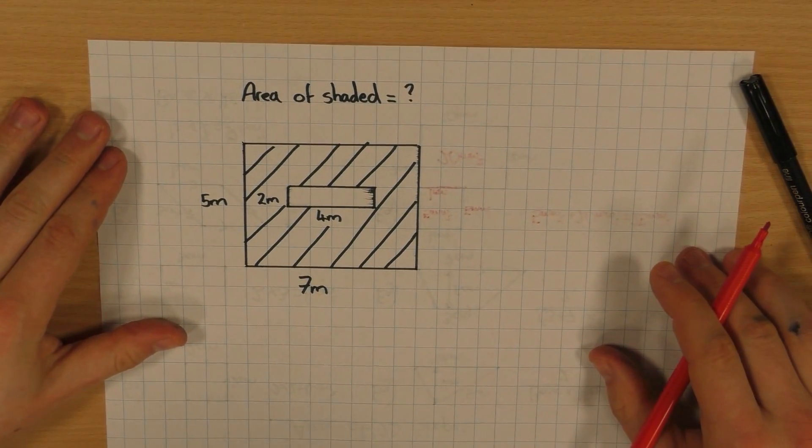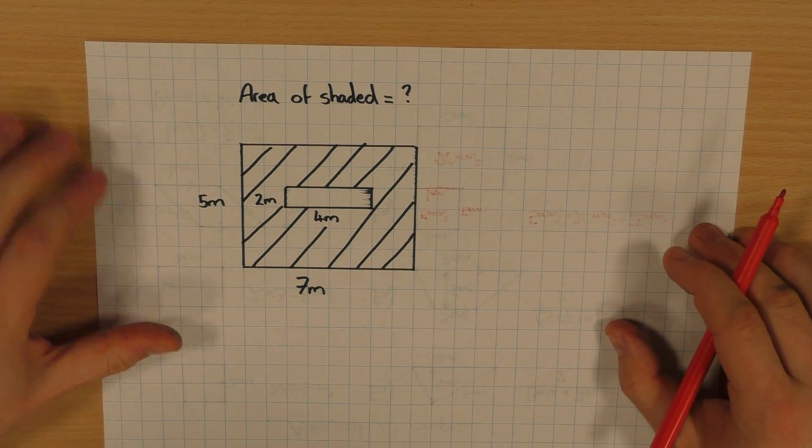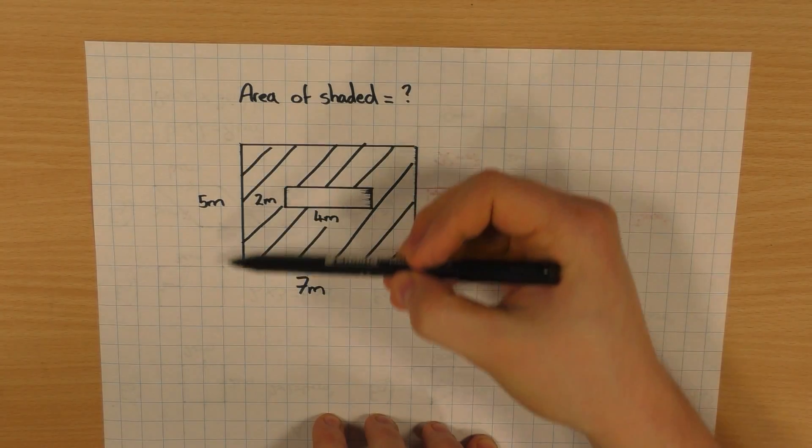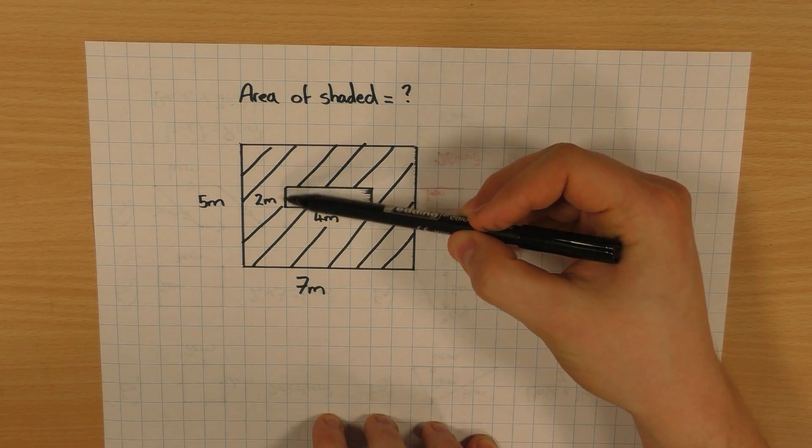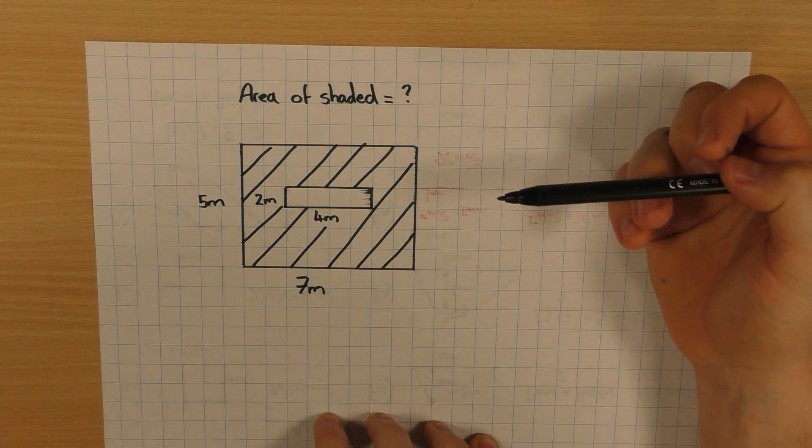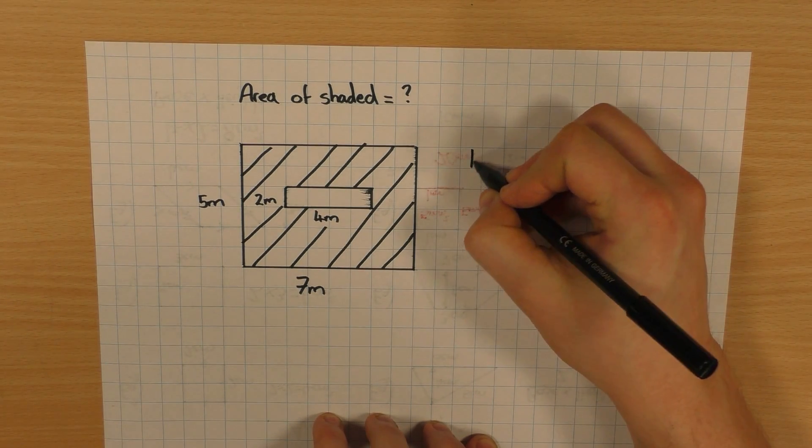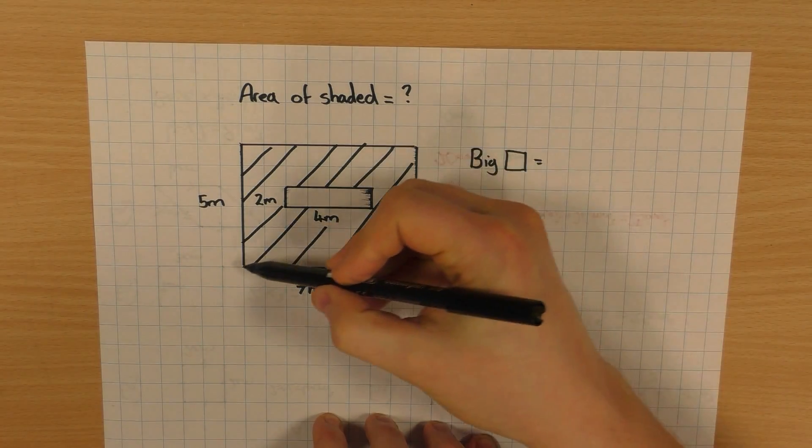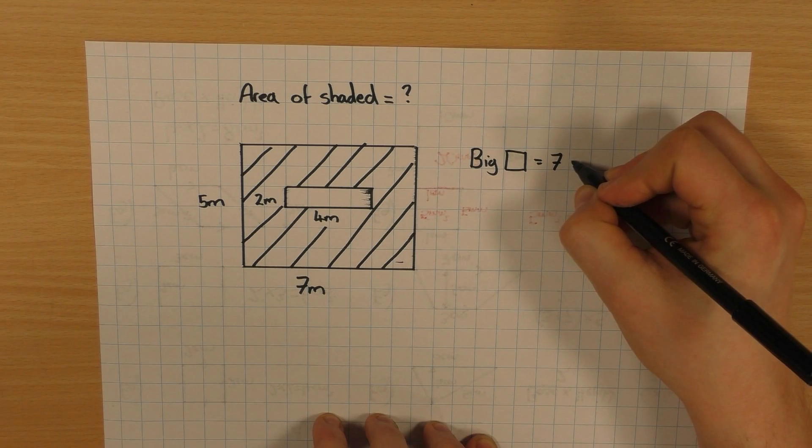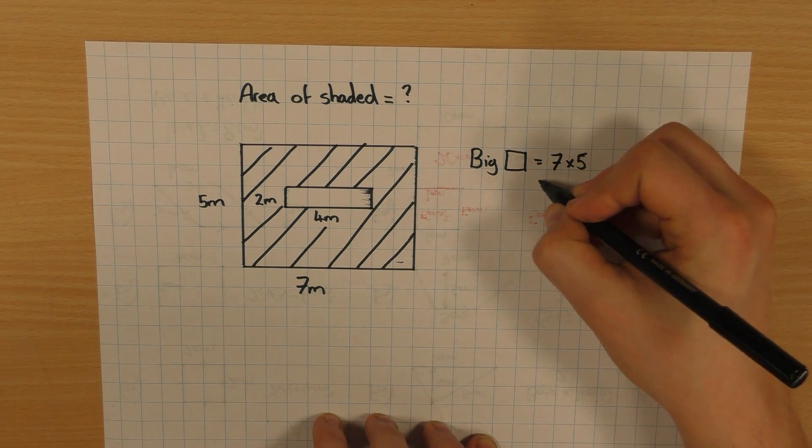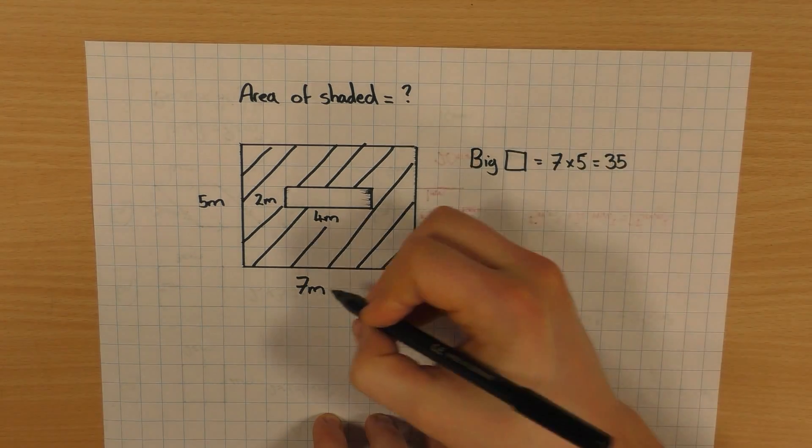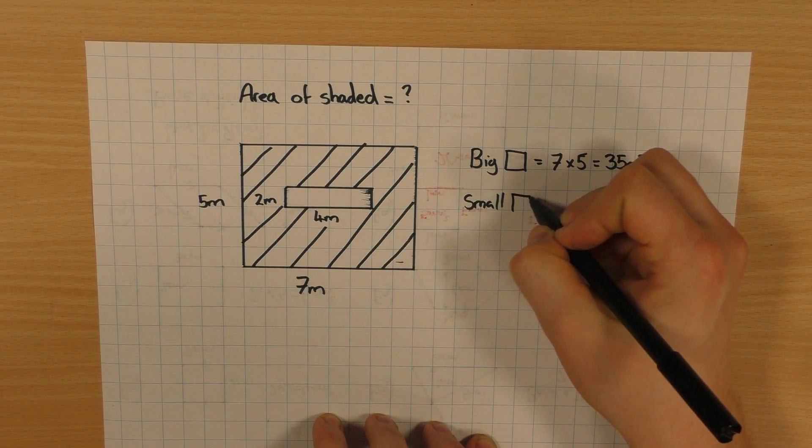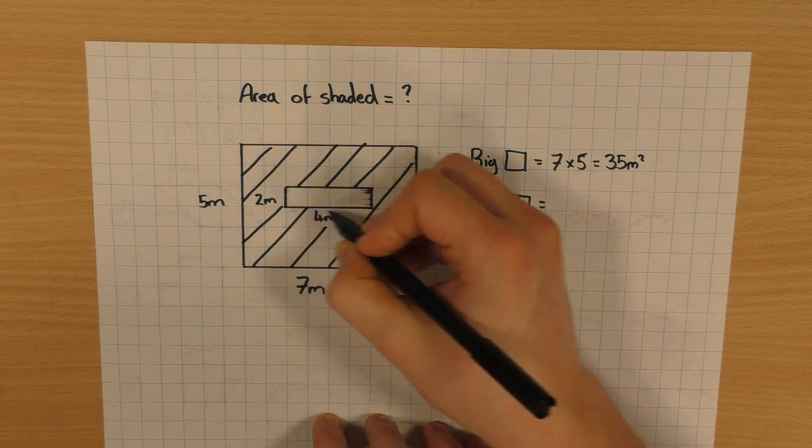And finally, you could have something that looks a bit like this, where it wants you to work out the area of the shaded shape. Now, hopefully, you could spot that the outside is a rectangle, and inside is a rectangle. And of course, just like before, we know how to work out the area of a rectangle. So work out the big rectangle first. So base times height. So 7 times 5, which is 35. This time it's meters. So meters squared.